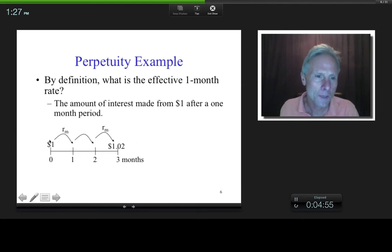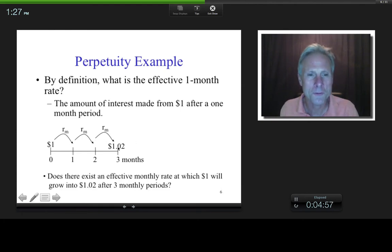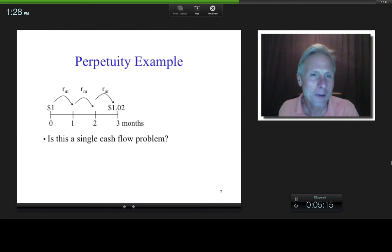So then, we know $1 grows into $1.02 after three months. So does there exist an effective monthly rate conceptually such that $1 will grow into $1.02 after three months if you had monthly compounding? It does, right? And that would be the equivalent, if you will, effective monthly rate. Now, to calculate that, is that a single cash flow problem? Sure.